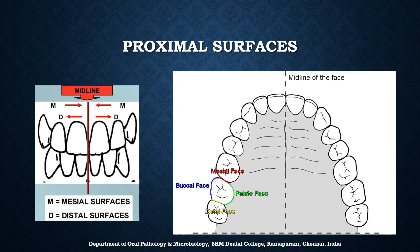The surfaces of teeth facing towards the adjacent teeth in the same dental arch are called proximal surfaces. The proximal surfaces can be either mesial or distal surfaces. The surface facing the midline is called the mesial surface and the surface away from the midline is called the distal surface. For example, in the maxillary arch, for the second molar, the line drawn in red is the mesial surface, the line in yellow denotes the distal surface, the line in green denotes the palatal surface, and the line in blue denotes the buccal surface.